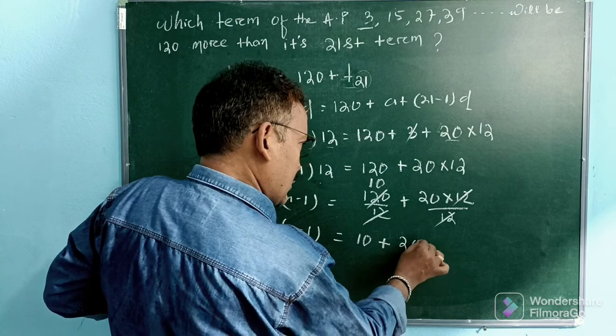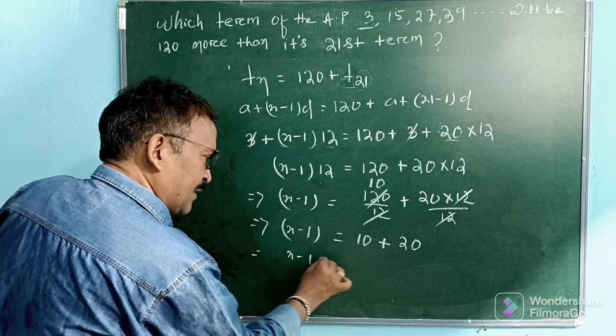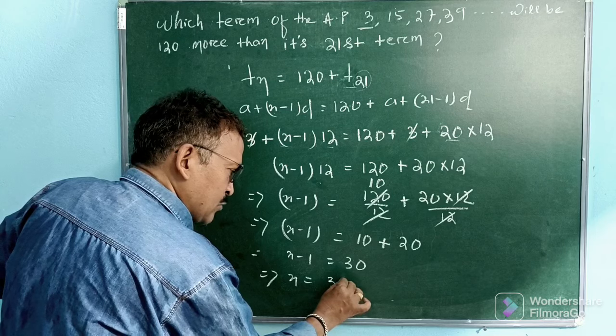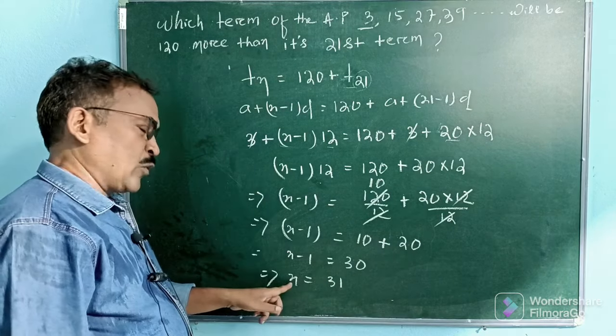So (n-1) is equal to 30. So n is equal to how much? 30 plus 1 is 31.